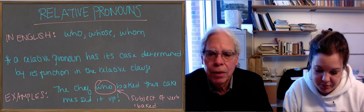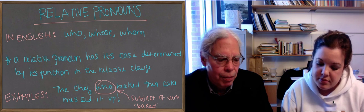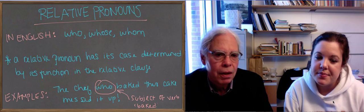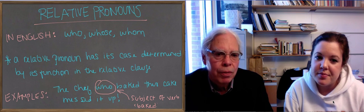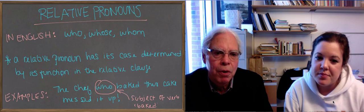We're going to look at the ones with who, whose, and whom, because they're very interesting from the point of view of understanding the way relative pronouns work in Greek and in English. In English, we have this relative pronoun who, whose, and whom, which has three different forms.